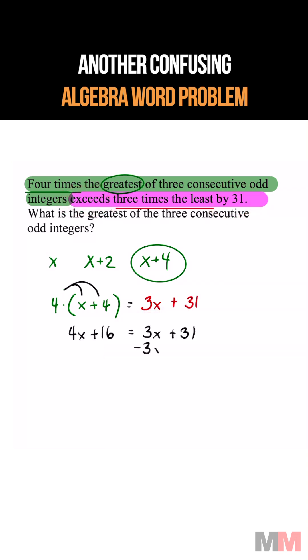Now we just got to solve for x. Isolate the variable. At the end, we get x equals 15, which is the first odd integer.